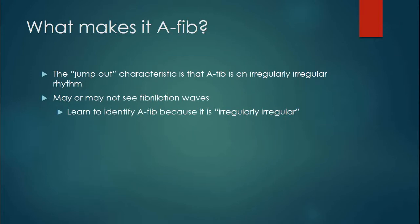So first of all, what makes it AFib? How are you identifying AFib? The jump-out characteristic should always be that AFib is an irregularly irregular rhythm. The rhythm at which the QRS complexes fall has no rhyme or reason — there's no even spacing between them. You may or may not even see fibrillation waves, especially in people who have well-controlled AFib. They're on daily PO calcium channel blockers and things like that, so you may not even see a fibrillation wave. Learn to identify it because it's irregularly irregular.